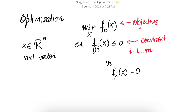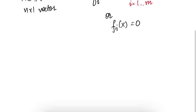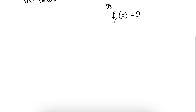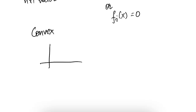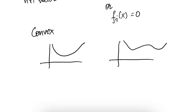So what is a convex function? Very roughly, a convex function which is a scalar function would look something like a bowl shape, while a non-convex function might look like something with multiple bumps or valleys.